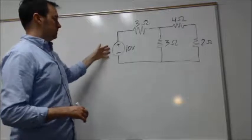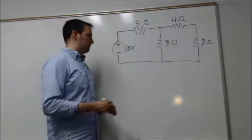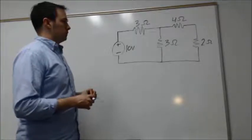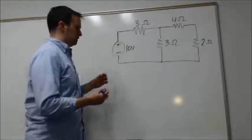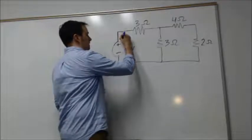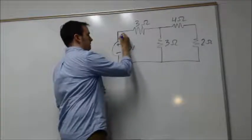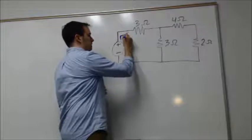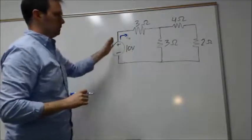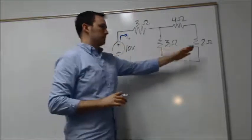The first thing we'll need to do is define what the current is traveling out from this source, which I'm going to call I_S. In order to determine that, we need to simplify all these resistances down into a single resistance such that we'll be able to come up with an equivalent resistance R_eq.